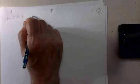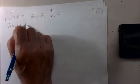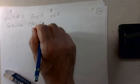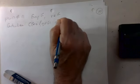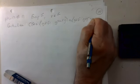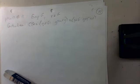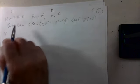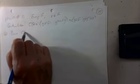Homework 12 number 11. We have a group G and an element x in G. The centralizer C(x) is the set of all g in G that commute with x: C(x) = {g ∈ G : gx = xg} = {g ∈ G : gxg⁻¹ = x}. We want to prove C(x) is a subgroup.